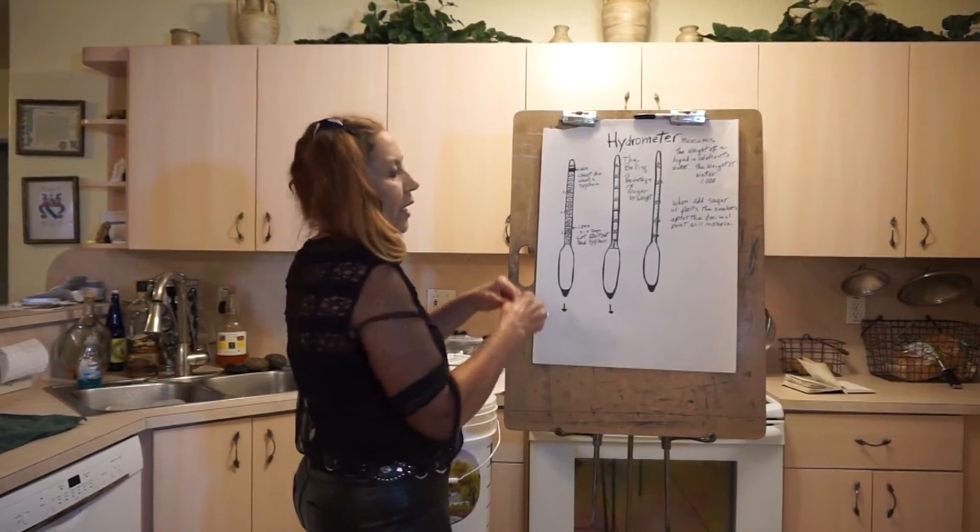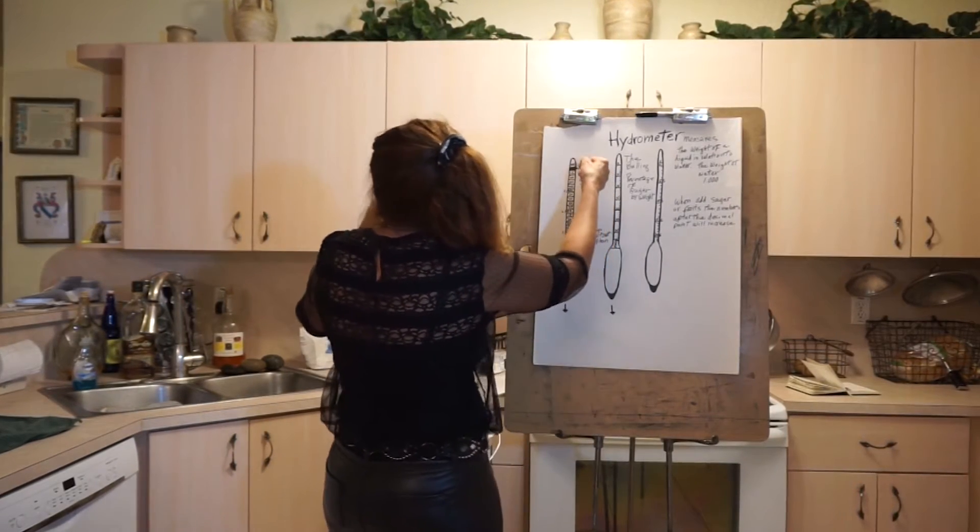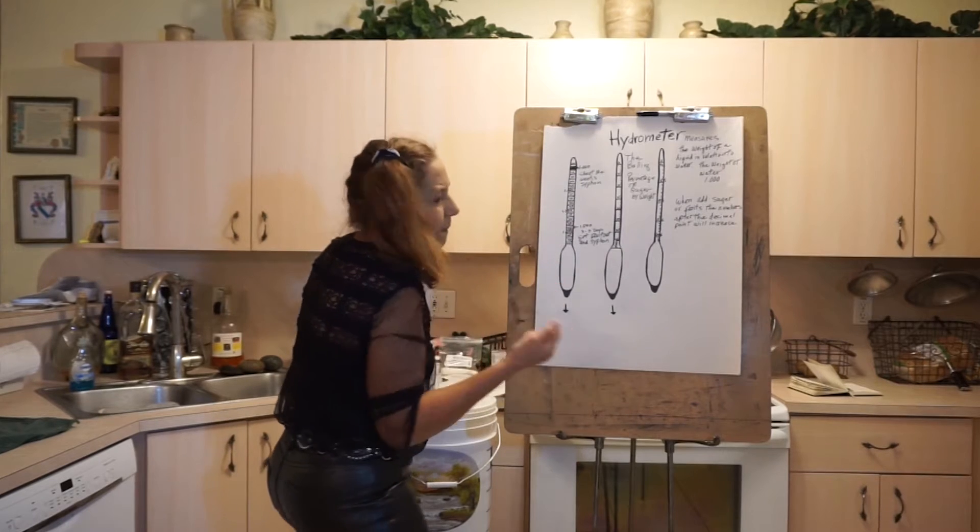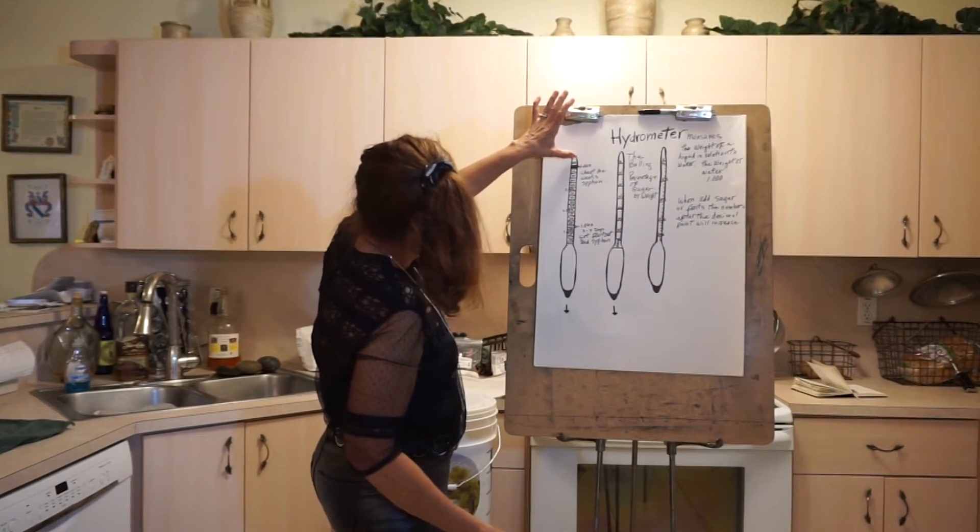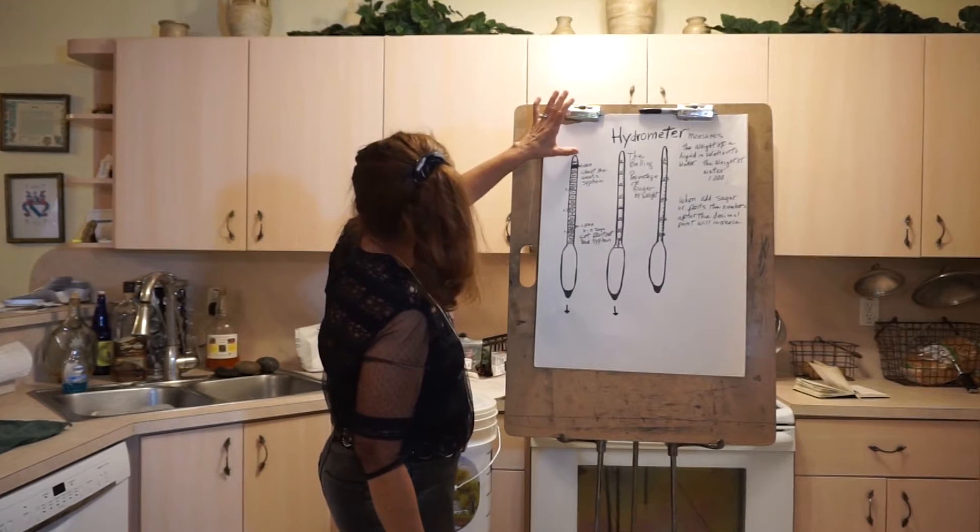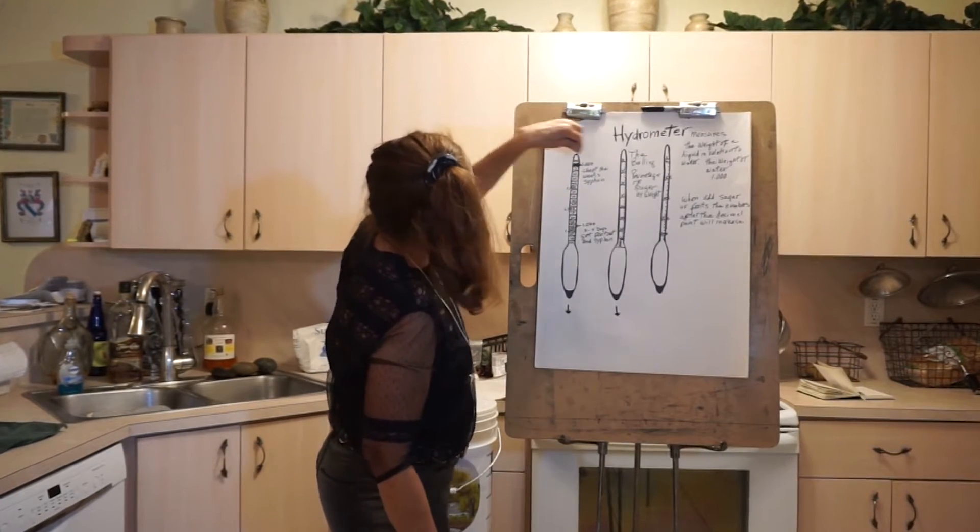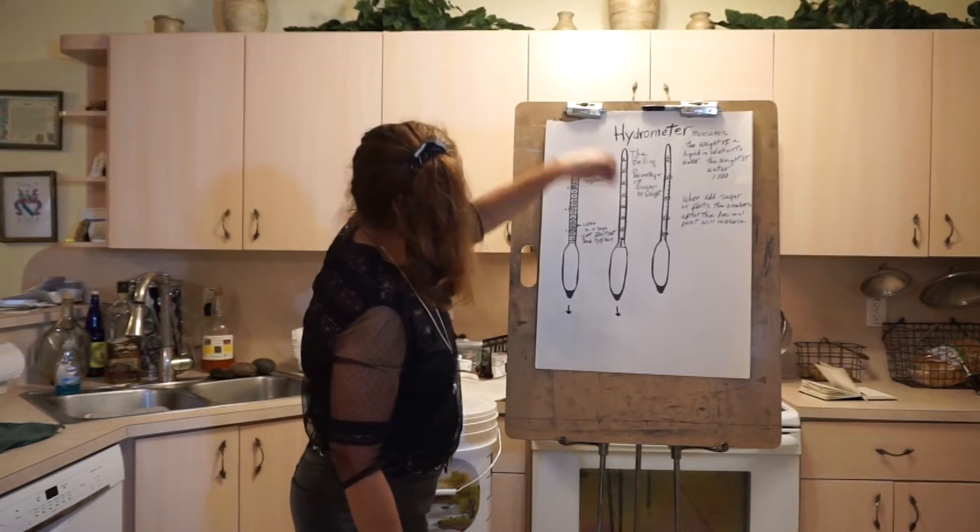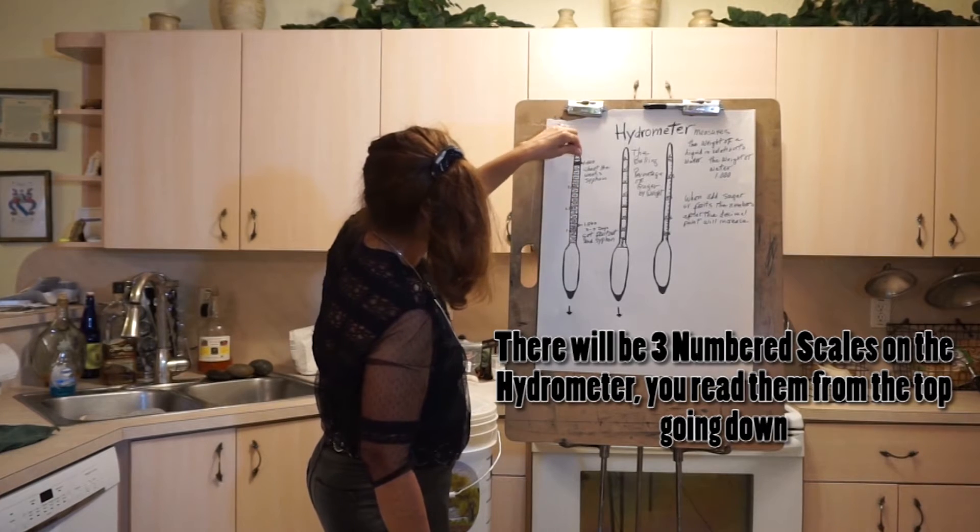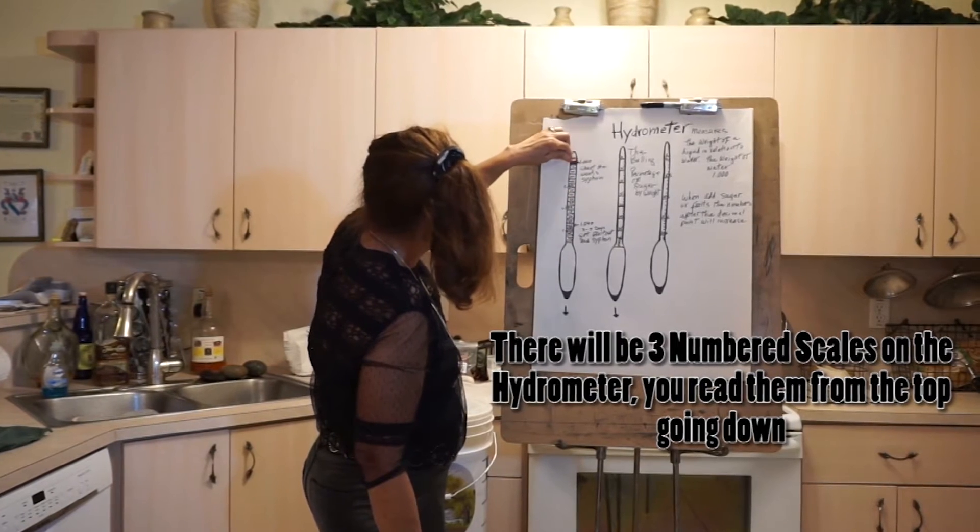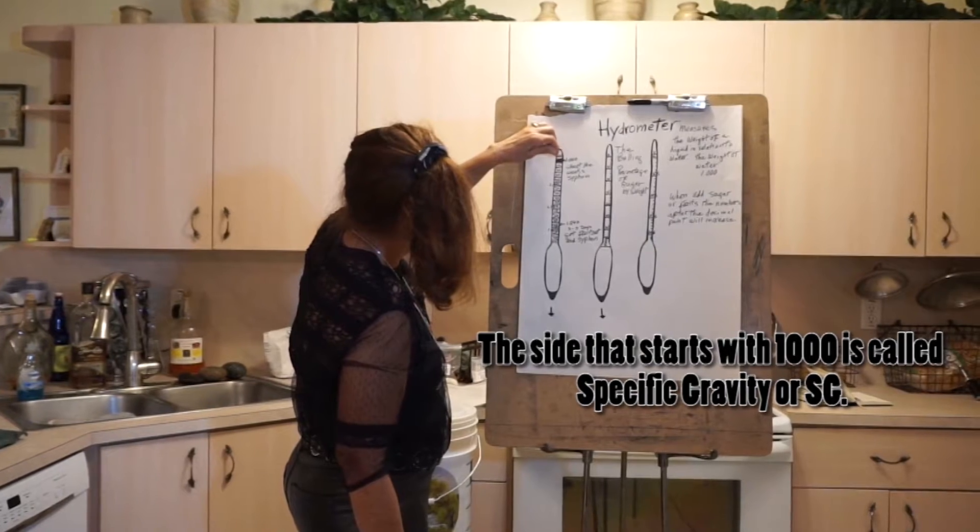When you have liquid and you start putting your sugar in, your fruits, usually this number is going to go up. The first numbers you're going to see at the top of the hydrometer - 1000, that's your water baseline. So when you start adding, you're going to start counting up from there.